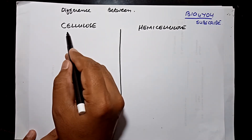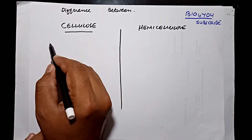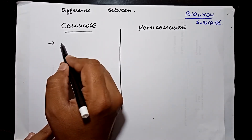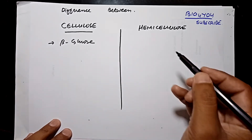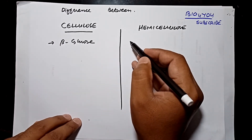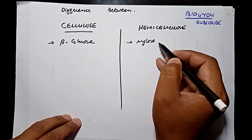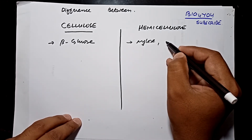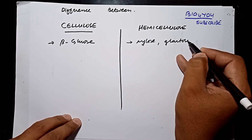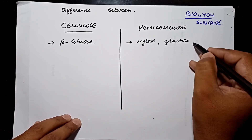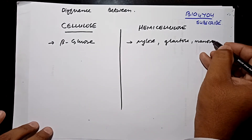First, their composition. Cellulose is made up of beta glucose. Hemicellulose, on the other hand, is made up of xylose, galactose, mannose, and other sugars. This is the composition of hemicellulose.